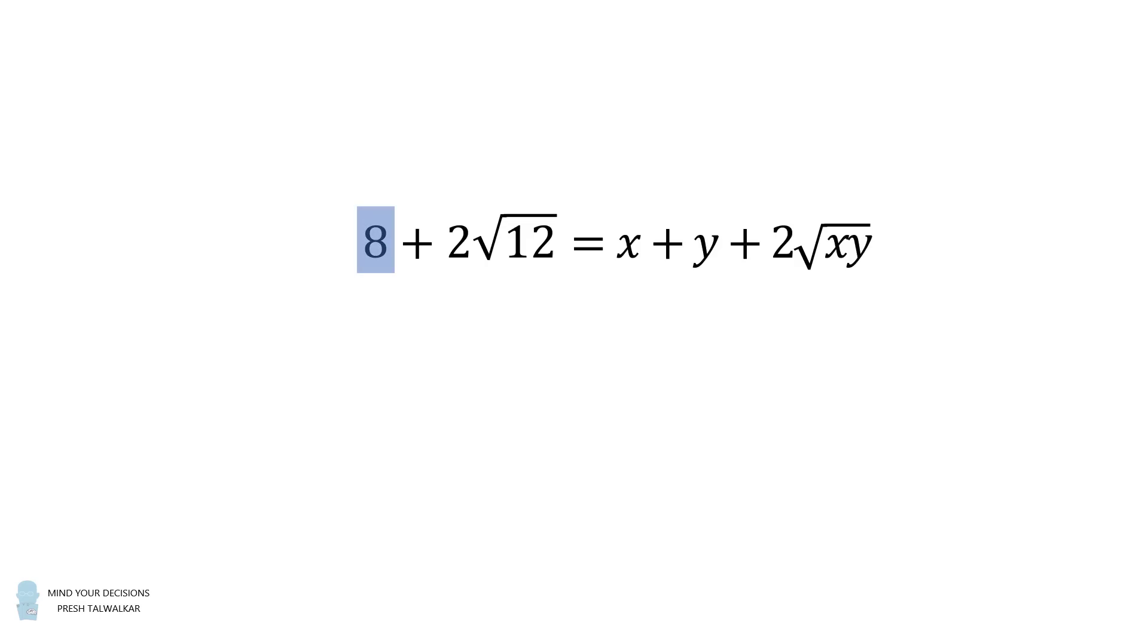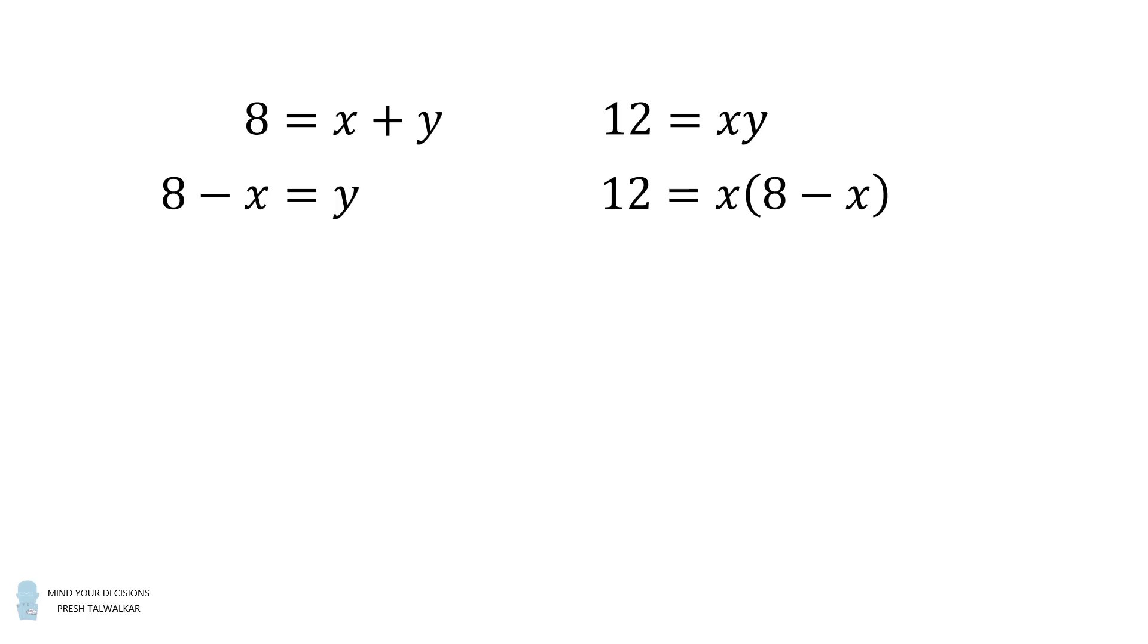So we will equate 8 with x plus y. That gives us one equation. And then we'll equate 2 times the square root of xy with 2 times the square root of 12, meaning 12 is equal to x times y. So we have a system of two equations. In the left-hand side, we'll solve for y. 8 minus x is equal to y. We substitute that into the second equation. So we get 12 is equal to x multiplied by the quantity 8 minus x.